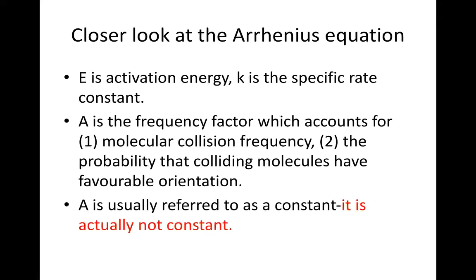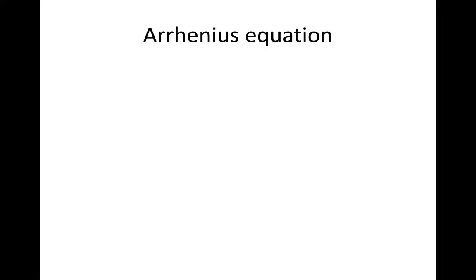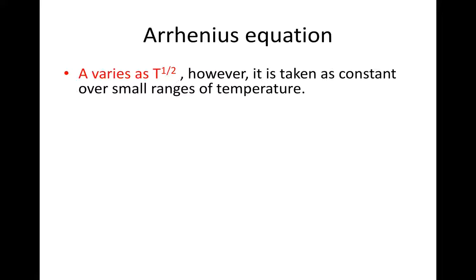A is usually referred to as a constant. It is actually not that constant. A is found to vary as T to the one half. However, it is taken as a constant over small ranges of temperature.